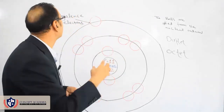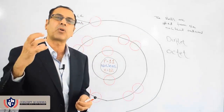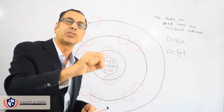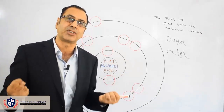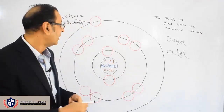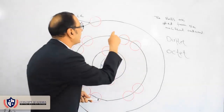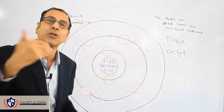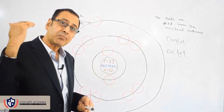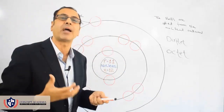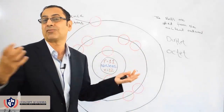If we go to the last shell electron — which are also called valence electrons — they are far away from the proton. The proton has the least force of attraction on them and the least control over them. Therefore, valence electrons have maximum energy. Energy level 1 has the least energy, energy level 2 has more, and the last shell or valence electrons have maximum energy because they are farthest from the nucleus.